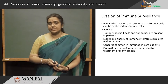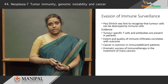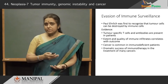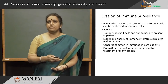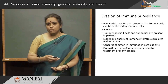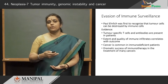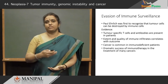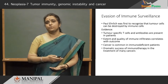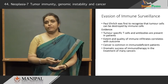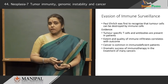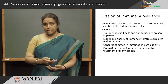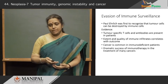We know that there are tumor-specific T cells and antibodies in patients who have cancer. These lymphocytes have been identified and we can also see in the morphology of cancer that there are quite a number of immune cells that infiltrate the cancer. More the number of lymphocytes, it has a bearing on the outcome — patients who produce a good immune response have a more favorable outcome. We also know that cancer is very common in immunodeficient patients; for example, in patients suffering from HIV, many cancers are common.